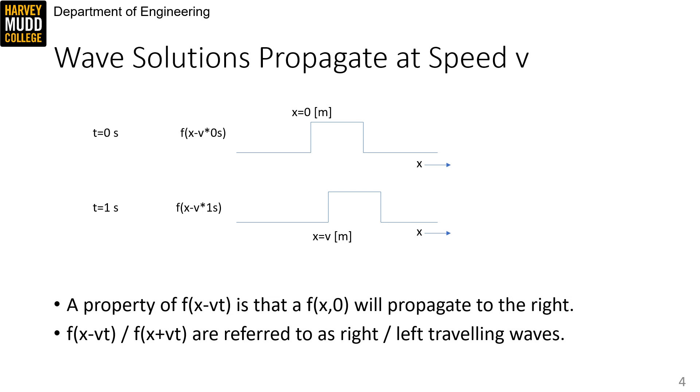And that's all of these solutions are guaranteed to propagate with time. To see this, we can consider some function f at time zero. So this is f of x zero in this top picture. One second later, this would have changed from f of x to f of x minus v, which means it would have shifted to the right by v meters. Because we've subtracted vt from the argument of the function.